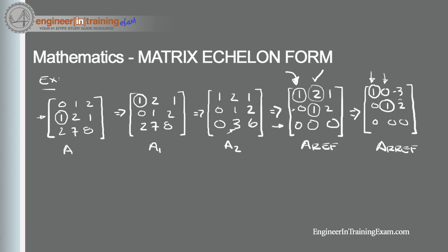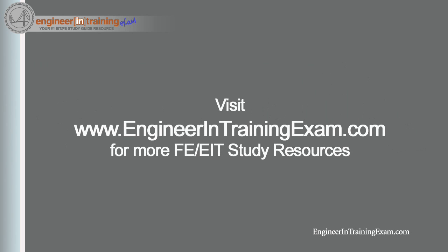That's it — that's how you get a matrix into its row echelon form and its reduced row echelon form using elementary row operations. If you have any questions, hop on over to engineerintrainingexam.com and send me feedback, suggestions, or just say hi. If you have requests for future videos, just let me know. Take care, bye!